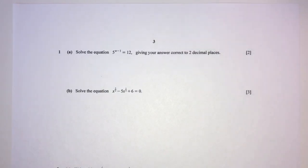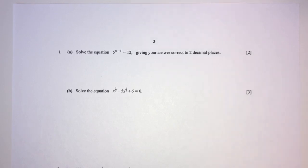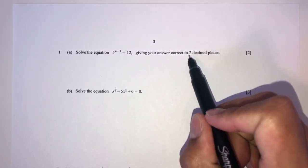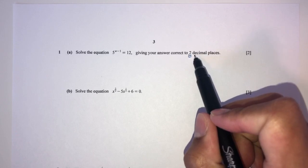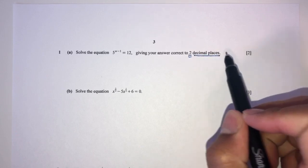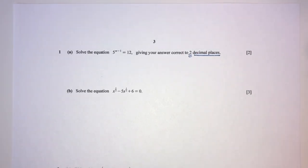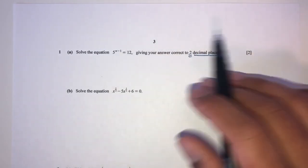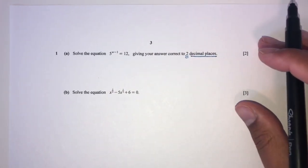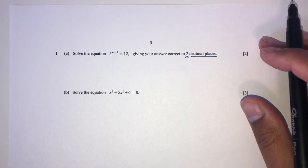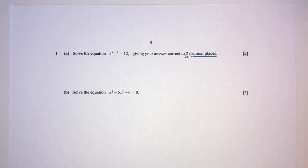Let's move on to question number 1. We have to solve the equation 5 to the power of w minus 1 equal to 12, giving your answer correct to 2 decimal places. You kind of know already your answer will not be exact because the question tells you to give your answer correct to 2 decimal places.